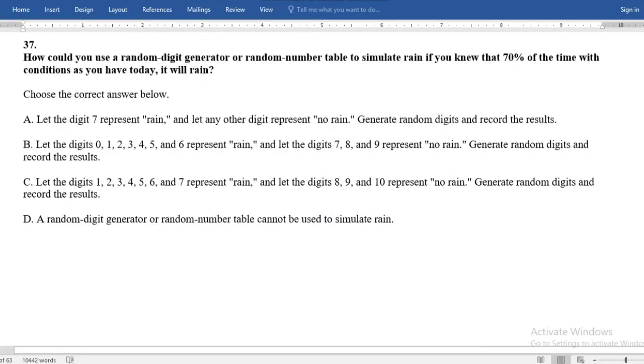Look at this. How could you use a random digit generator or random number table to simulate if you know 70% of the time with conditions you have today it will rain?